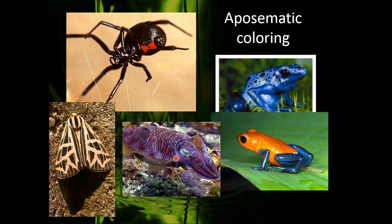Here are some examples of aposematic coloration. The hourglass on the belly of a black widow is a warning that it has a lot of venom. Poison arrow frogs have poison that excretes from their skin and are all very bright colors. Sometimes moths and butterflies have coloring like this to tell predators that they taste bad.